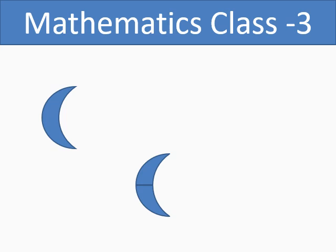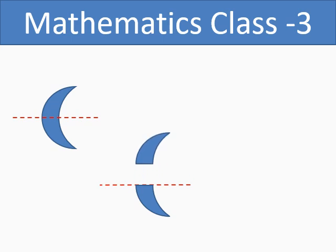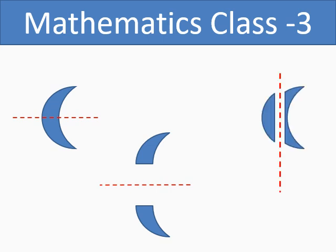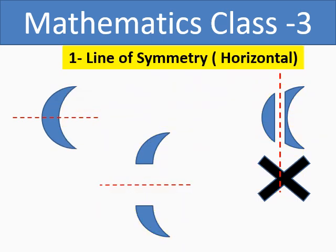If you draw a horizontal line passing from the middle, you will get two equal halves along the horizontal line. So we can say we have a horizontal line of symmetry. Now if you take the same moon shape and cut it vertically, you do not get two equal halves — there is no vertical line of symmetry. So in the moon shape, we have one line of symmetry.